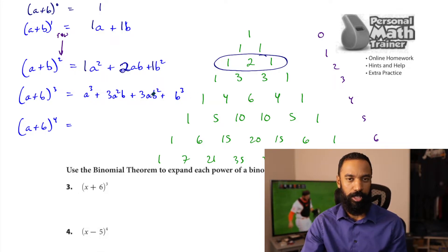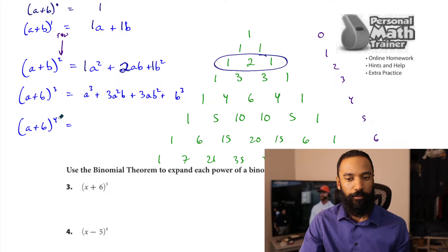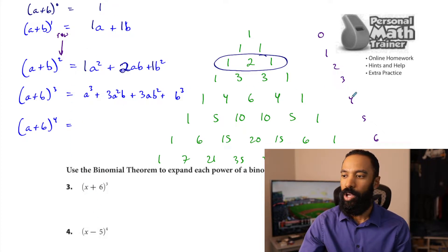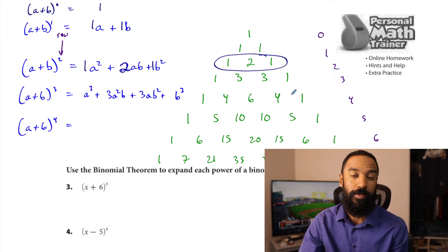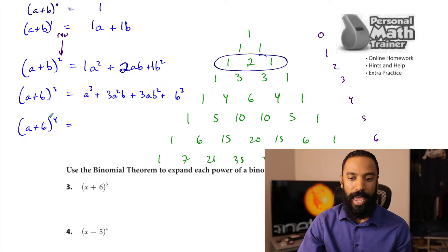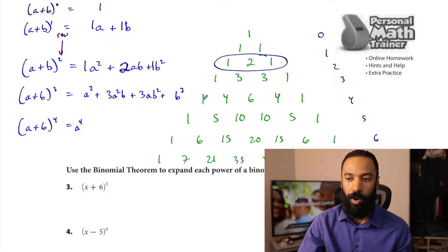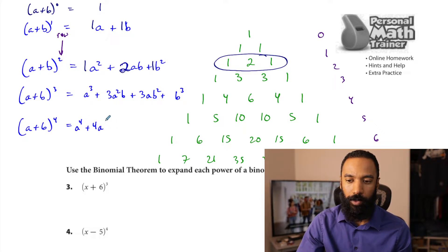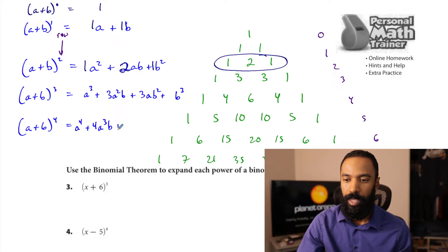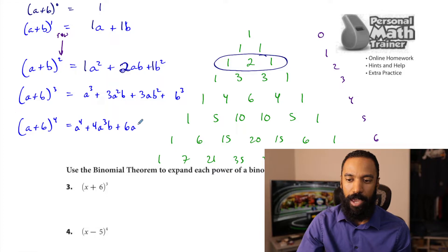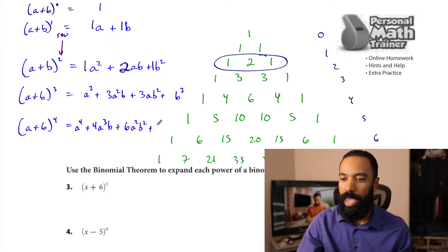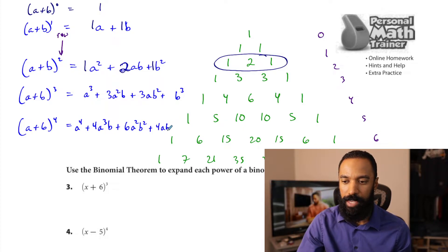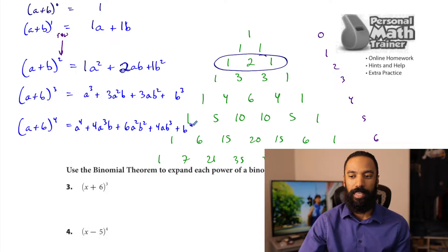Let's try fourth power. a plus b to the fourth power — we're going to use row four: one, four, six, four, one. The first term: a is to the fourth power with no b's — coefficient one. Next: coefficient four, reduce a's power by one to get a cubed, increase b's power by one. Then six: a squared, b squared. Then four again: a to the first, b cubed. And then one: no more a, b to the fourth. That's the expansion.